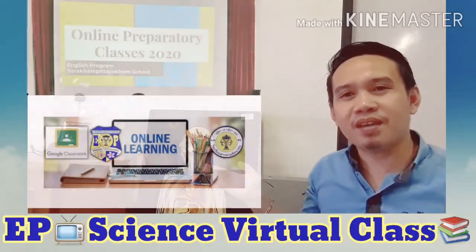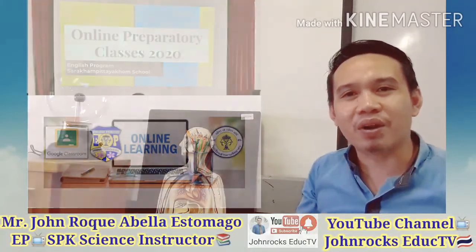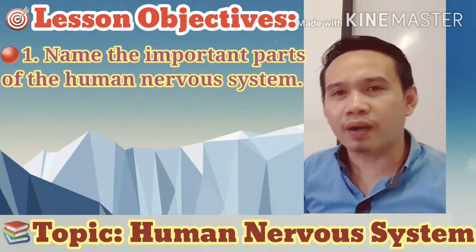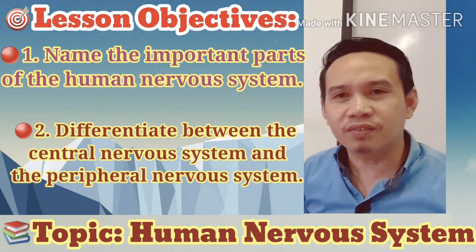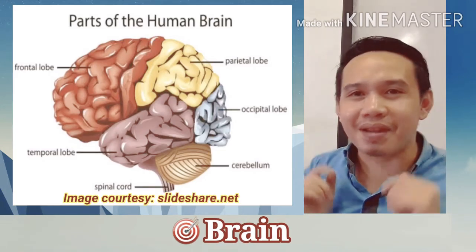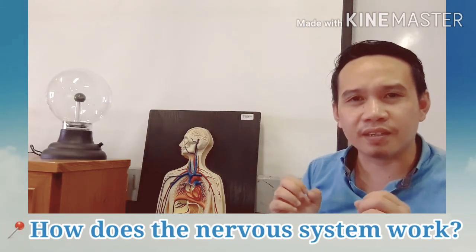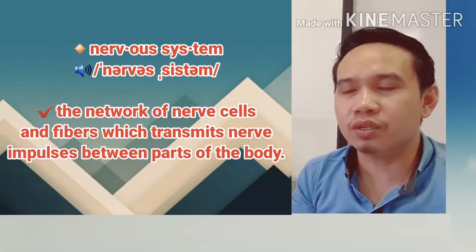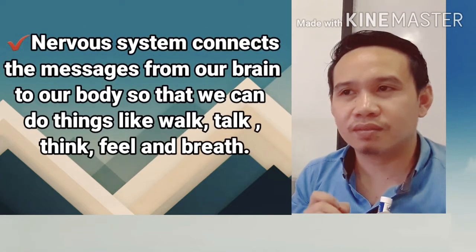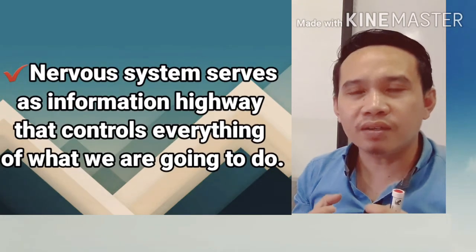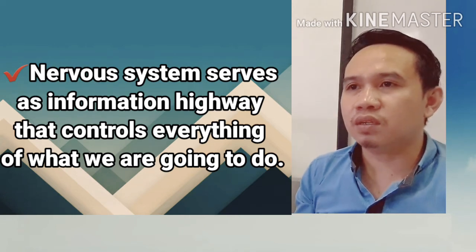Hi everyone, welcome back to AP Science virtual class. I'm Jen Rooks from Educator TV, your host for today. In today's video, you are going to learn about the human nervous system. Our nervous system connects messages from your brain to your body so you can do things like walk, talk, think, feel, and breathe. Those are the major functions of our nervous system — it is an information highway that controls everything that you do.